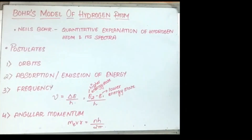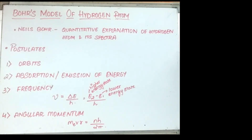The next topic is Bohr's model of the hydrogen atom. Niels Bohr was the first to explain quantitatively the general features of the hydrogen atom and its spectrum. The first postulate of Bohr's model is that the electron revolves around the nucleus in fixed energy circular paths of fixed radius. These paths are known as orbits, also called stationary states or allowed energy states.